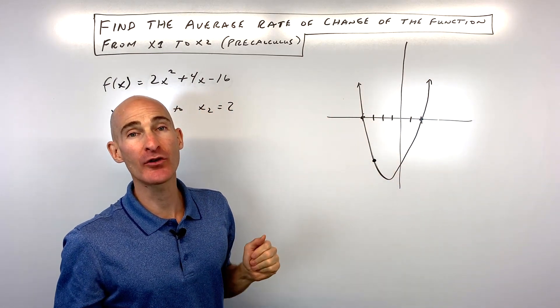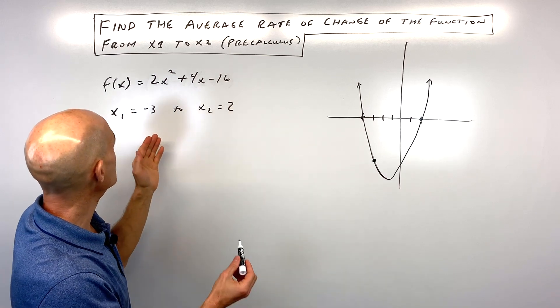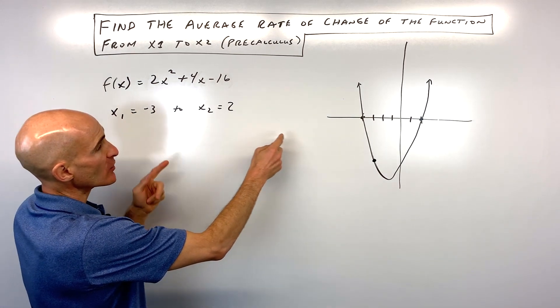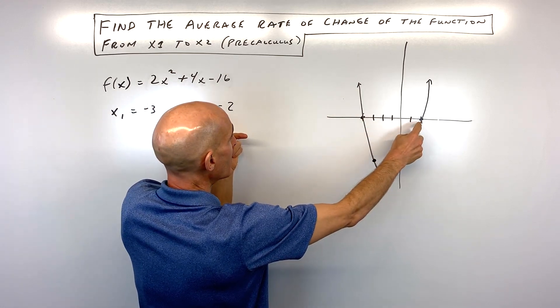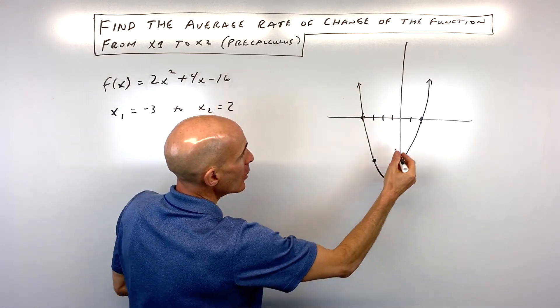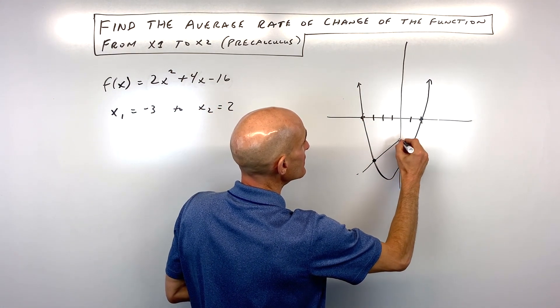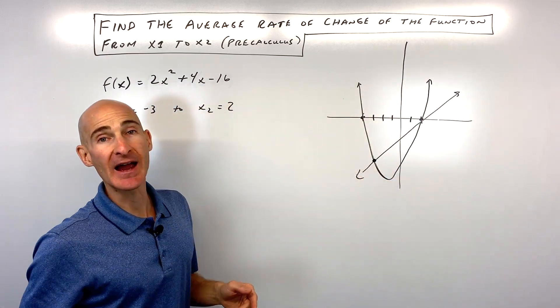But what we're looking at is between these two points: when x is -3, this point, to when x equals 2, this point. What's the average rate of change between these two points? Meaning, what's the slope of that line?